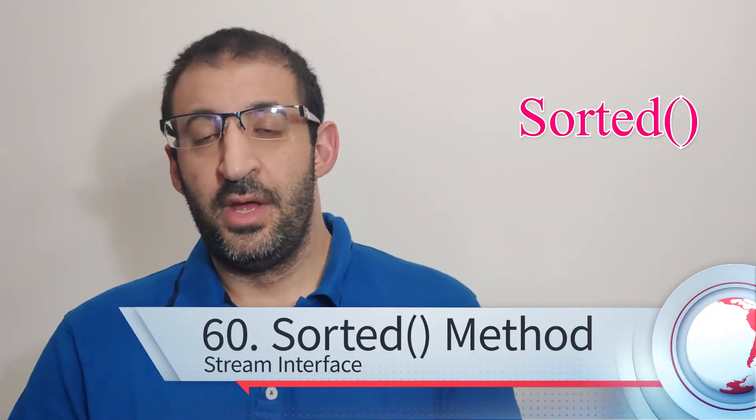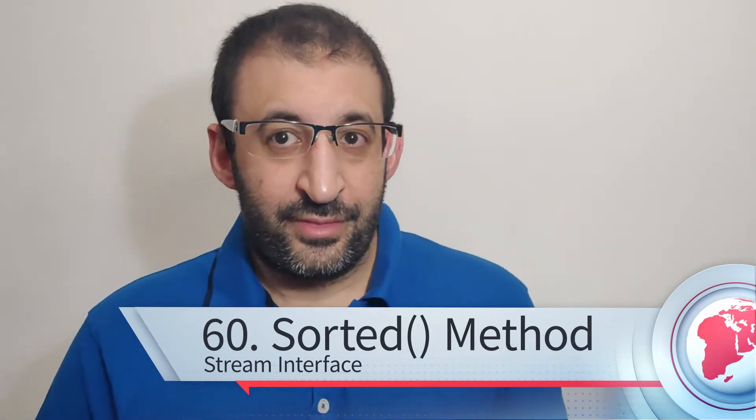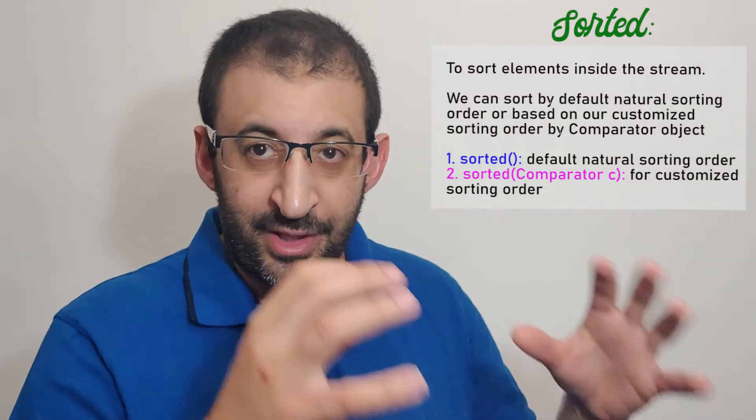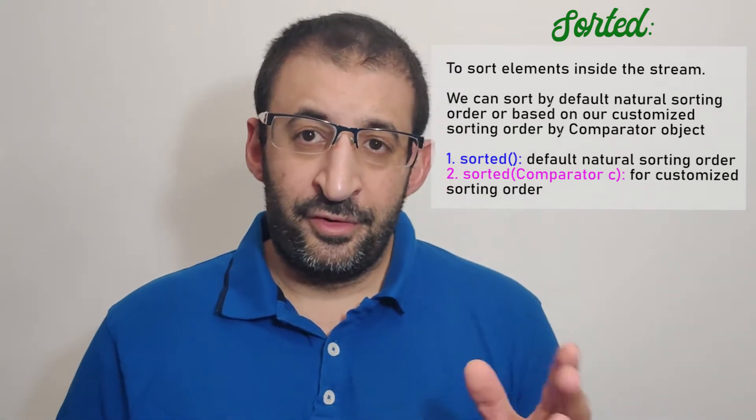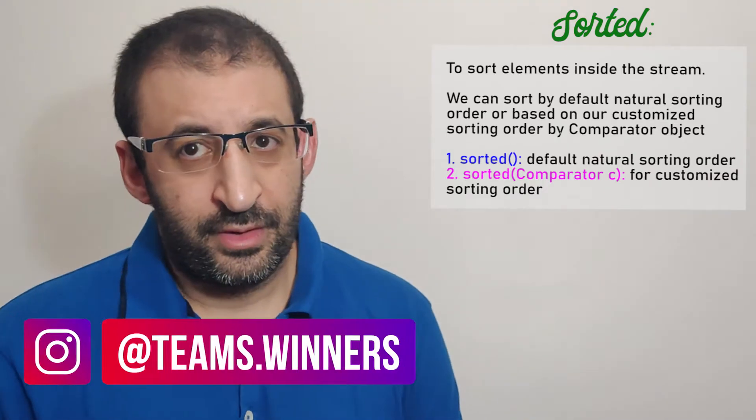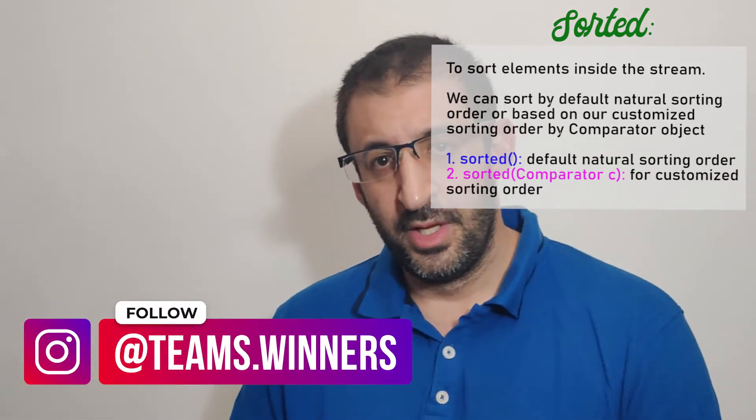and count. In this video, I will talk about a new method that also processes in the stream: sorted. Sorted is used to make sorting of our elements that are in the stream. We can sort them by default order or by using our custom sorting order. If we use custom sorting order, we use